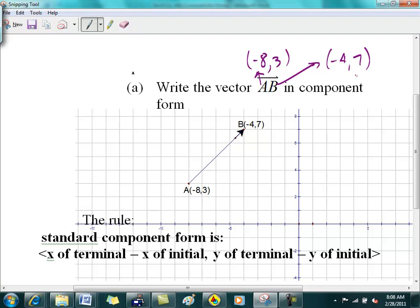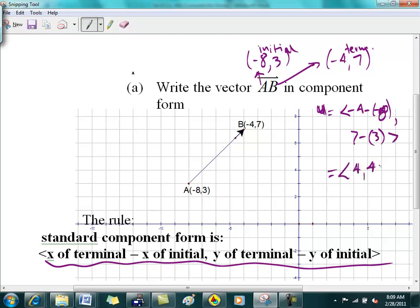To put it in component form all you need to do is follow this rule here. The vector is equal to the X coordinate of the terminal - remember this is terminal, this is initial - so what's the X coordinate of the terminal? Negative 4. And initial? Negative 8. So negative 4 minus negative 8, comma the Y coordinate of the terminal 7 minus the Y coordinate of the initial. You can see that the answer is 4 comma 4.